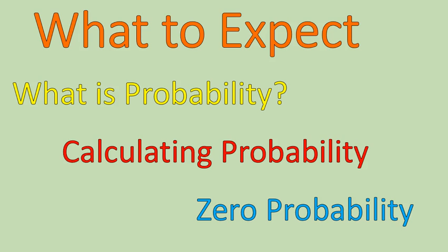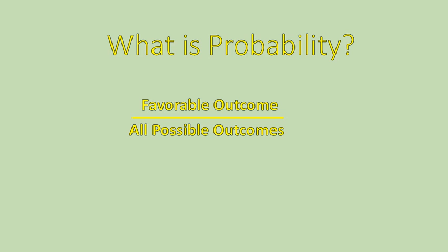Kind of like the chance of a high schooler dating Beyonce or something — that's like zero probability, so we're going to get into that as well. Probability means the favorable outcome over all possible outcomes. In other words, it means what it is you're looking for — the chances of it happening over all other options.